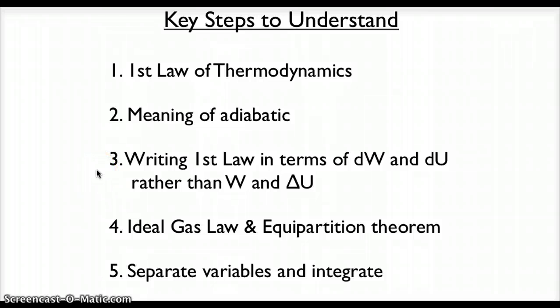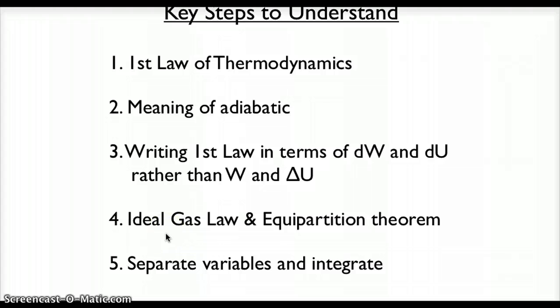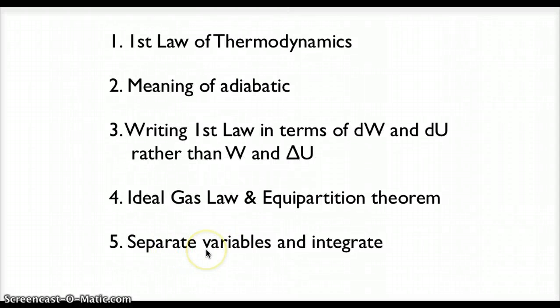Moving on, we wrote the first law in terms of dW and dU rather than W and delta U. That lets us set up some nice expressions that we can then do the integrals at the end. We used the ideal gas law to rewrite pressure and the equipartition theorem to write an expression for internal energy. And notice that when we used the equipartition theorem, this is where we assumed that it was a monatomic gas. If it had been diatomic, we would have had a little bit different expression for the internal energy coming from the equipartition theorem. We separated our variables, that's getting dV and V on one side, dT and T on the other side.